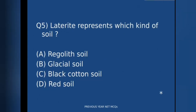The fifth question: laterite represents which kind of soil? The options are regolith soil, glacial soil, black cotton soil, or red soil. The correct answer is option A, regolith soil. Laterite soils are a kind of regolith soil.